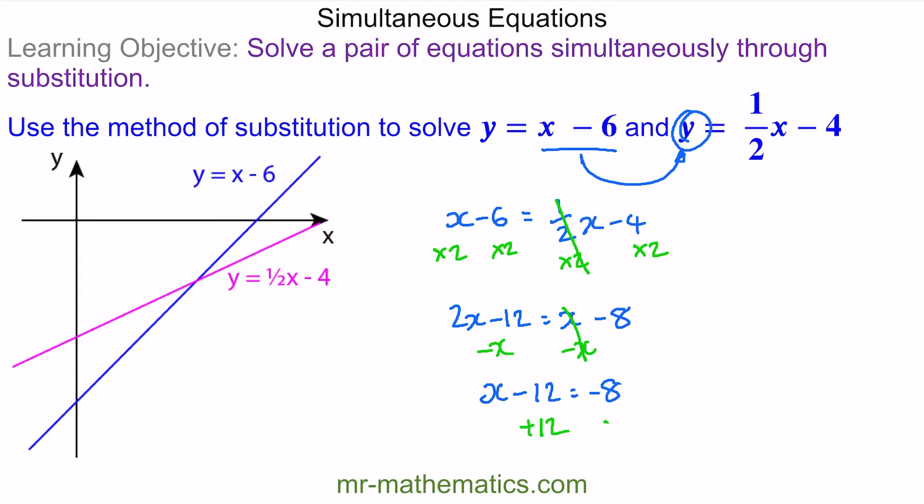We'll add the 12 to both sides. These will cancel. And now we're left with x equals 4. So where the two lines cross, we know the x value is 4.